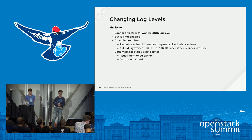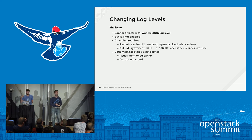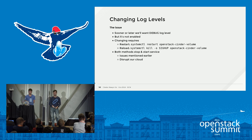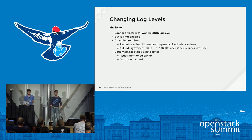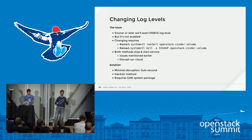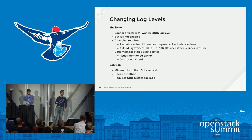Another common scenario: your cloud is running with logs at info level, you have an issue and wish they were at debug level, but changing them requires restarting the service. As we've seen, restarting Cinder volume is not trivial and will likely disrupt your service. What we'd like is a way to change the log level in under a second with minimal disruption. You can do this with GDB — it's a bit hacky but it works.